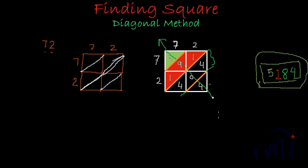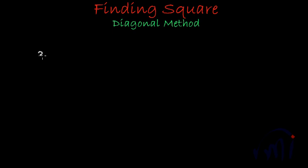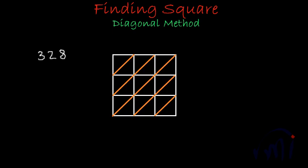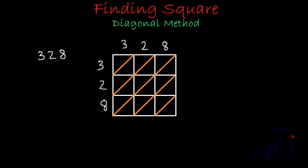Let's take one example where we find the square of a three-digit number. Suppose we want to find the square of three hundred and twenty-eight. It is a three-digit number, so I'll draw a square grid of three columns and three rows. I write 3, 2, 8 across the columns and 3, 2, 8 down the rows — where eight is in the units place on the rightmost column, two in the middle column, and three in the leftmost column.